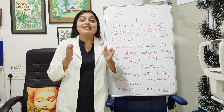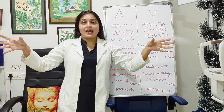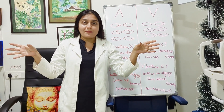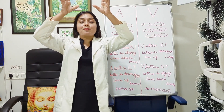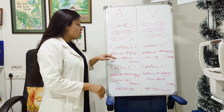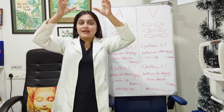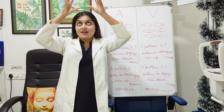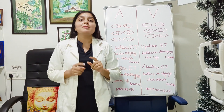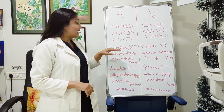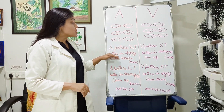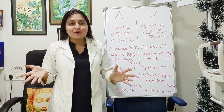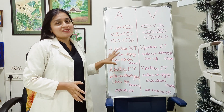Now if you have A pattern exotropia — in primary gaze the eyes are out. In A pattern, the exotropia becomes lesser when you look up, so it is better in up gaze. If it is better when you look up, then the chin will drop — chin down — so that we can bring that up gaze into primary gaze. So the patient will have a chin down position in A pattern exotropia because the squint is better in up gaze. These points may come as an MCQ or viva question, so this is very important.